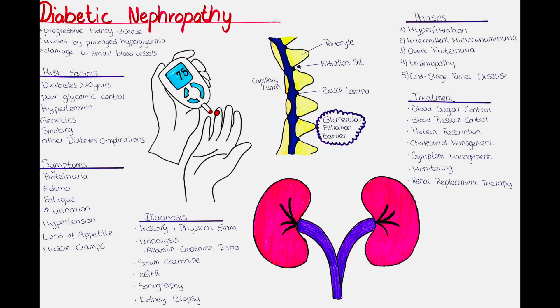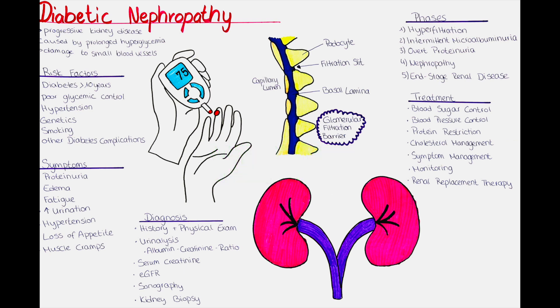What are symptoms of diabetic nephropathy? Initially, diabetic nephropathy might not produce noticeable symptoms, but as the disease progresses, it can lead to more severe kidney damage and ultimately to kidney failure, a condition called end-stage renal disease.